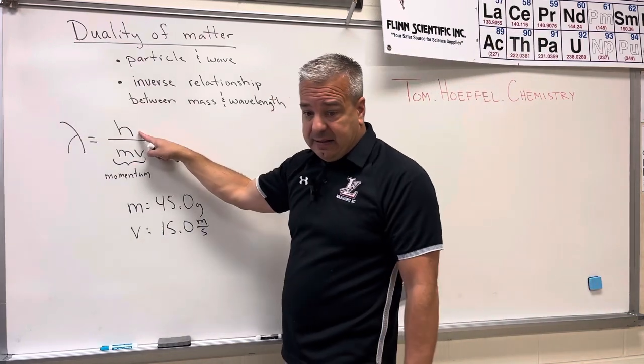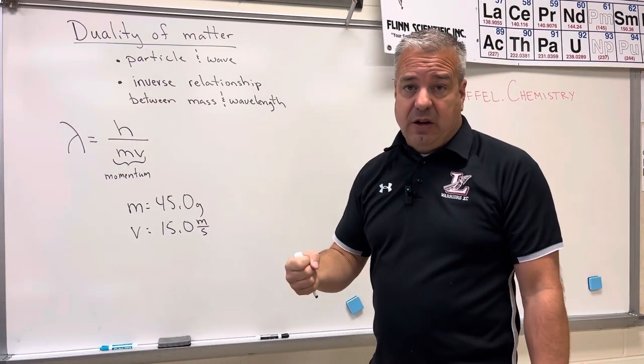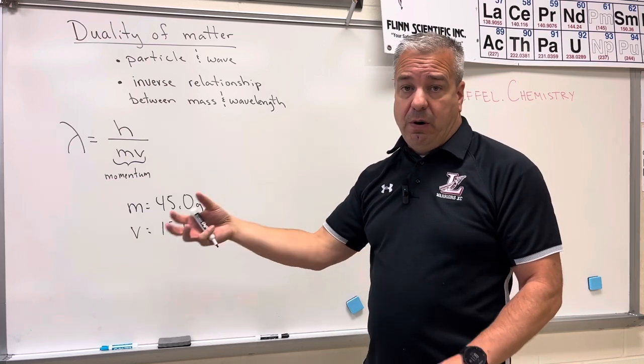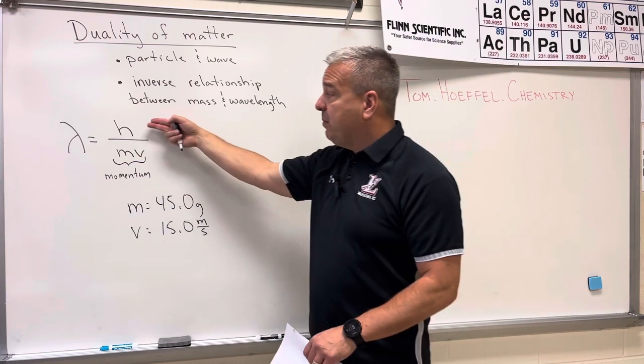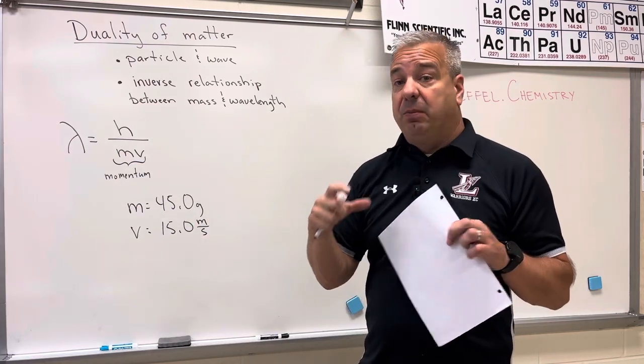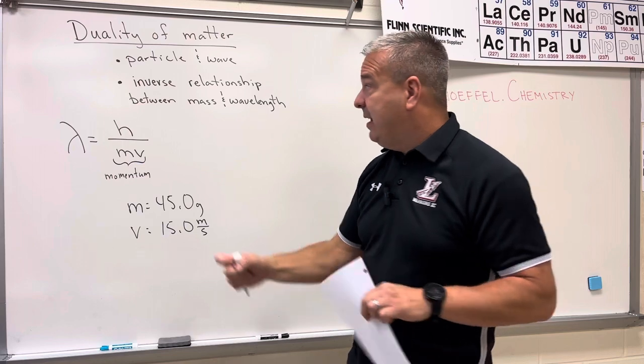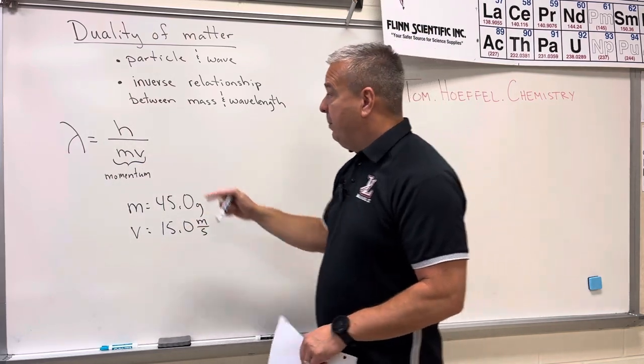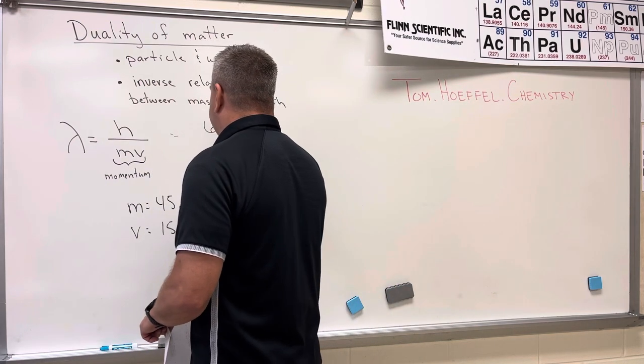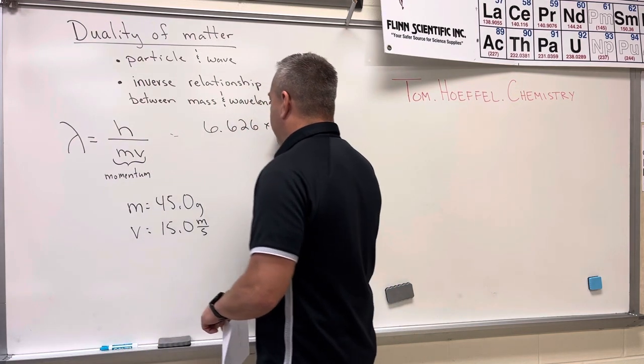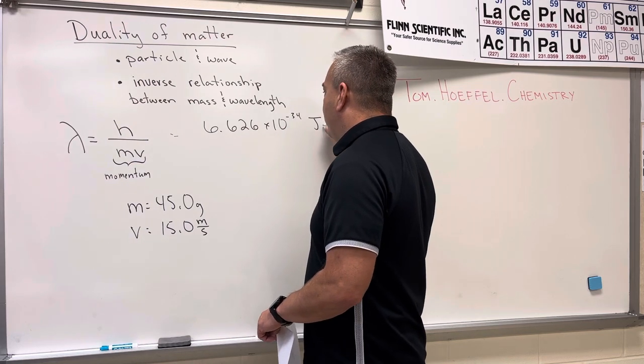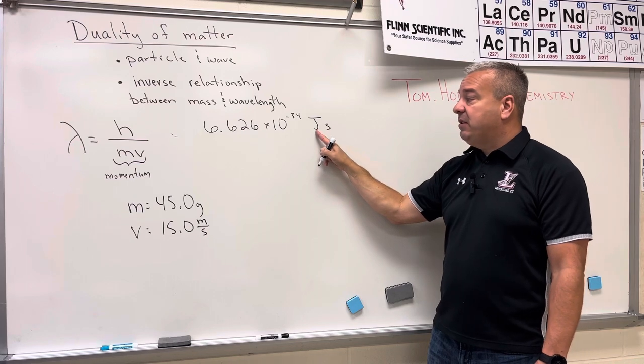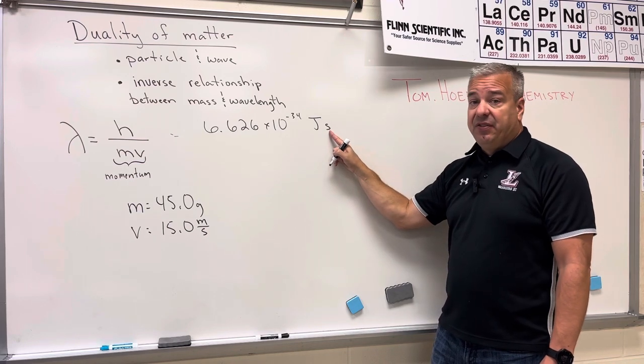So Planck's constant is a constant. You get this off the AP equation sheet if you're taking AP chemistry. If you are in college, this might be a number you might have to memorize, or your professor might ask you to bring a note card. Planck's constant is equal to 6.626 times 10 to the negative 34 joule seconds. So it has two units: an energy unit, the joule, followed by a time unit, the second.